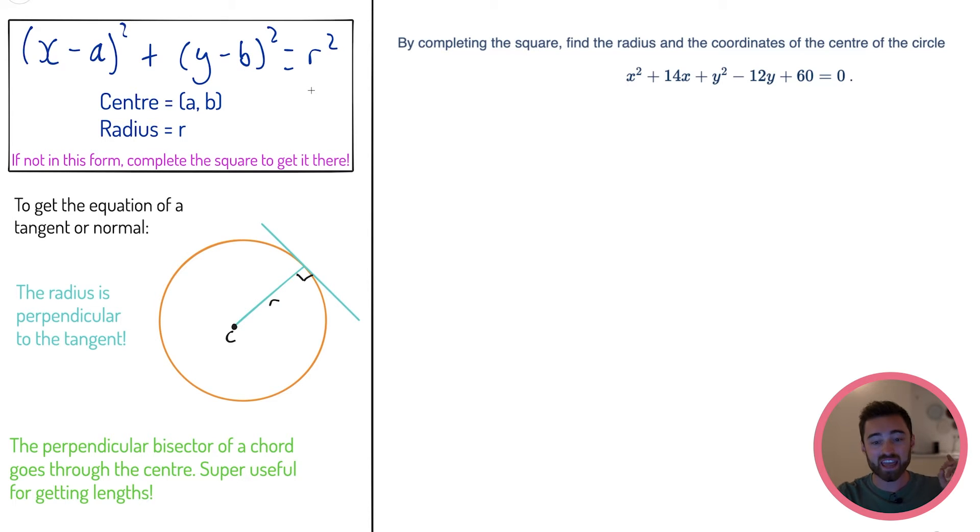Here is a question and we have something that looks really grim. It's a circle, find the radius and the coordinates, but it just looks horrible. All we need to do is complete the square first on these x terms, second on these y terms, clean it all up and it turns out pretty nice.